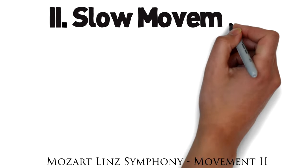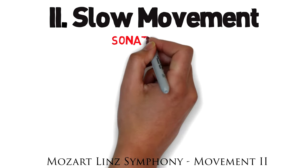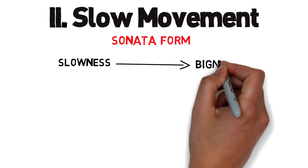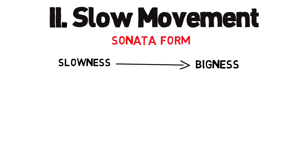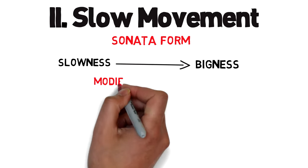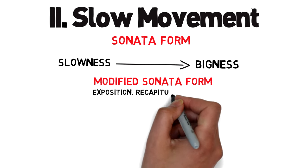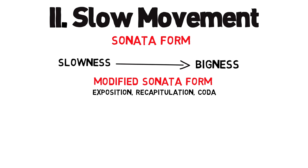Onto the slow movement. This movement can also be in sonata form, but remember that in classical music slowness often means bigness. It can be in sonata form even if the development is only eight bars long, because of the breadth and slow pace at which the music unfolds. The composer could also recreate the feel of sonata form with just an exposition, recapitulation and coda, excluding the development — and this works just because of how expansively the music unfolds. It might not need a development to make its point.